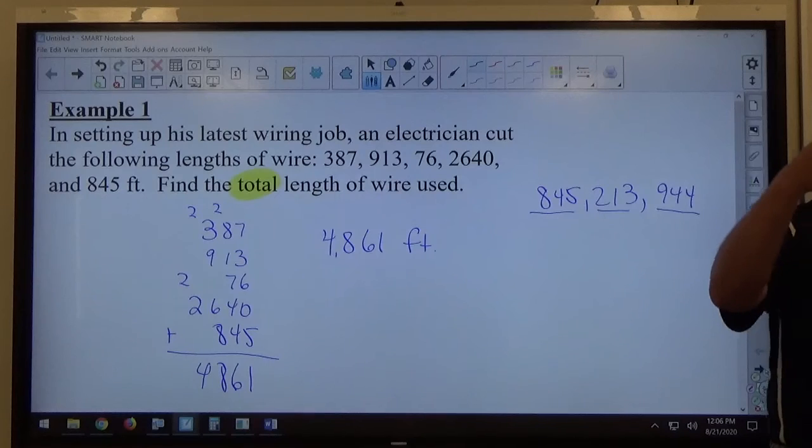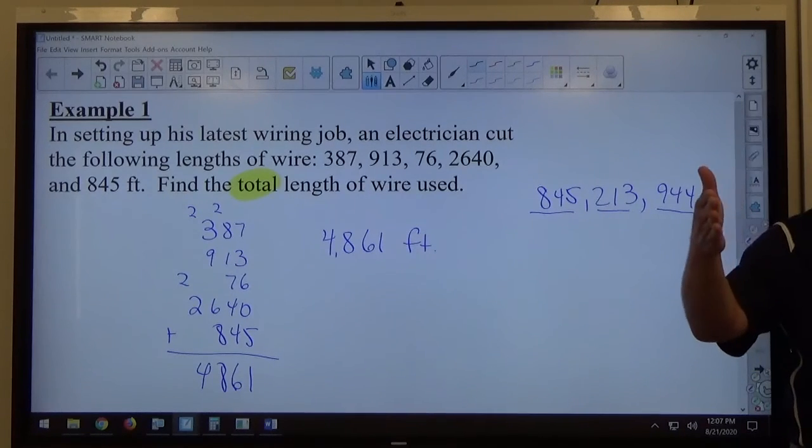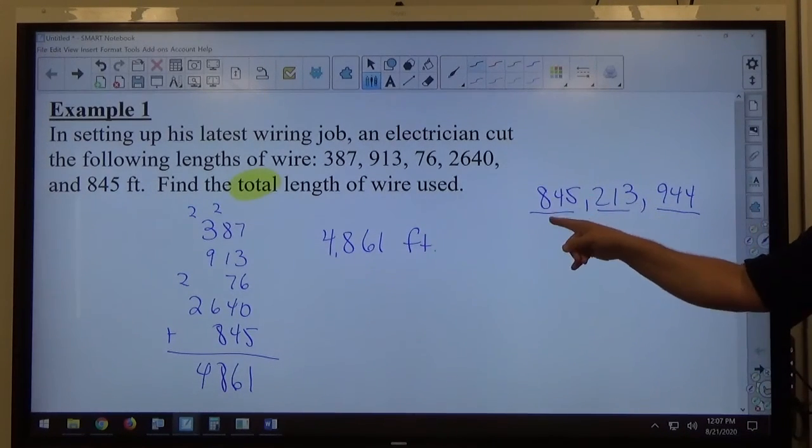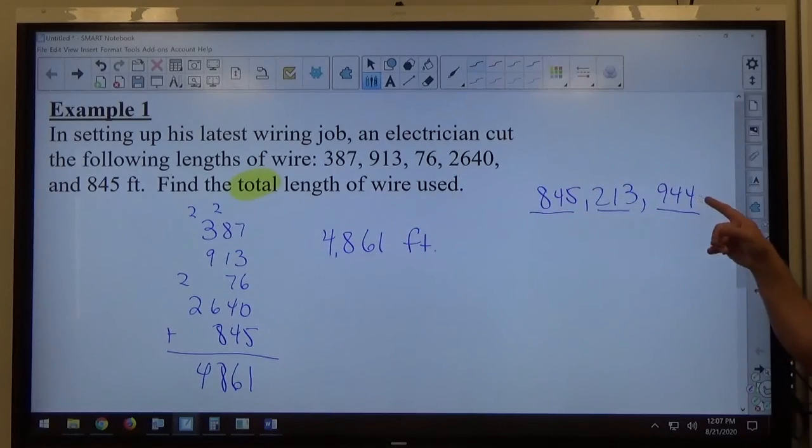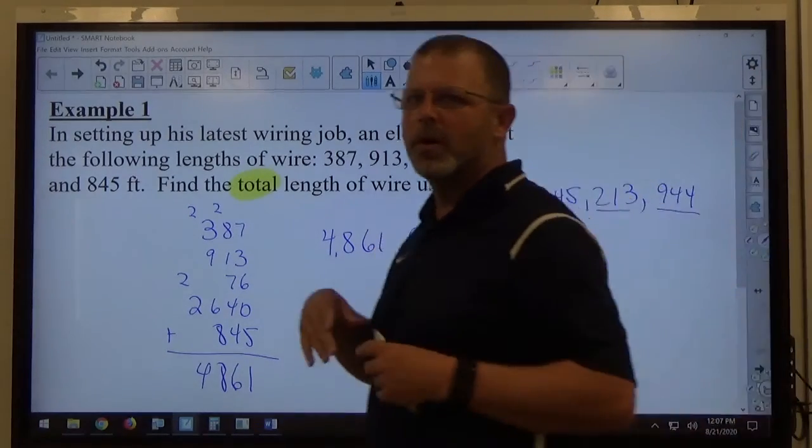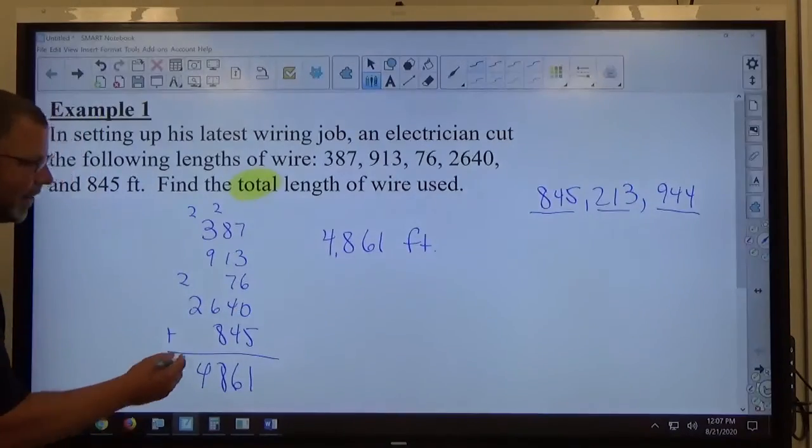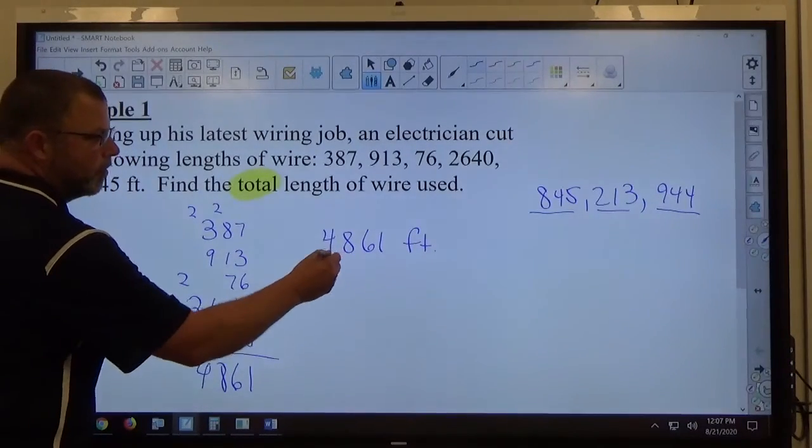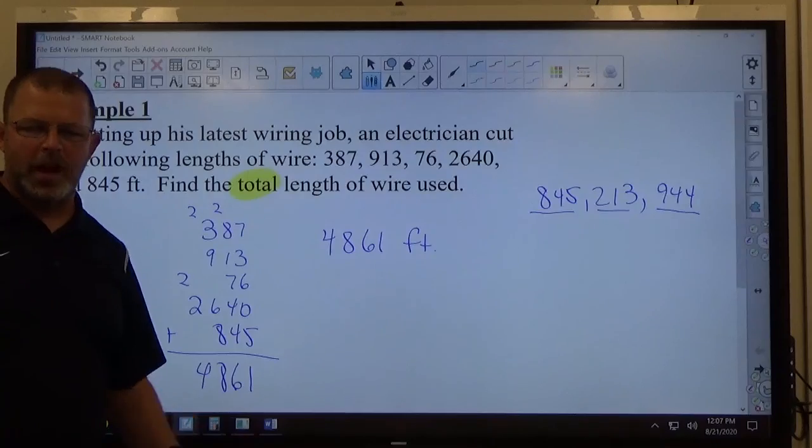The commas are just to make everything go between 1 and 1,000. So, 845 million, 213,944. That's what the commas are for. But if you wrote this answer and didn't have the comma on it, I know what you're talking about. I don't feel obligated to use the comma.